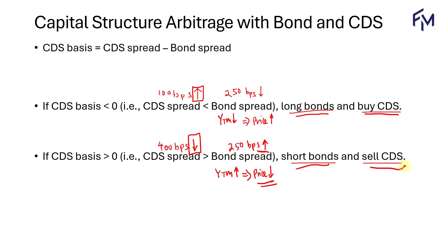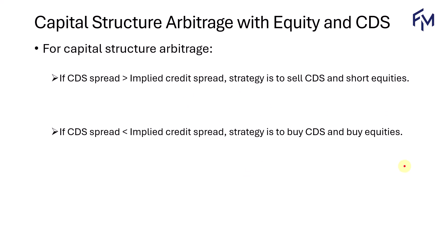Think about how you would benefit from the changes in the spreads in both the CDS and the bond. In the same way, if the capital structure arbitrage involves the CDS spread and the implied credit spread — calculated using the Merton model or the structural model, which is based on equity value — and the CDS spread is greater than the implied credit spread, then the strategy is to sell CDS and short equities.